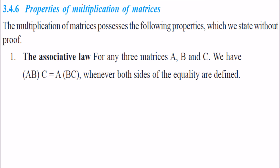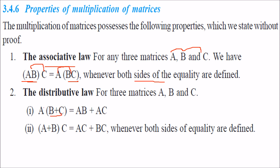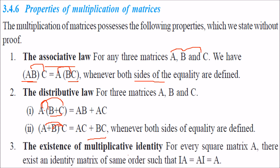When dealing with multiplication of matrices, we need to examine the properties. The associative law states (A·B)·C = A·(B·C) when both sides are defined. The distributive law states A·(B + C) = A·B + A·C, and similarly (A + B)·C = A·C + B·C. The existence of multiplicative identity: for every square matrix A, there exists an identity matrix I such that I·A = A·I = A.